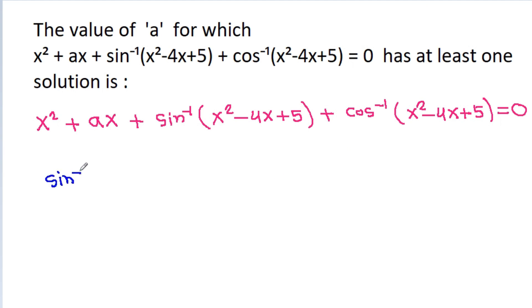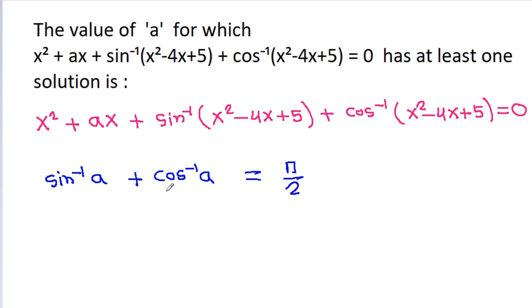We know that sin⁻¹(a) + cos⁻¹(a) = π/2. But the domain of the sin⁻¹ and cos⁻¹ functions is from -1 to 1, so the argument should belong to [-1, 1].